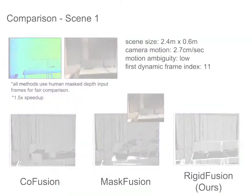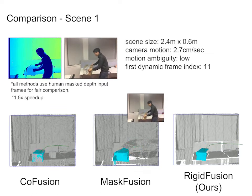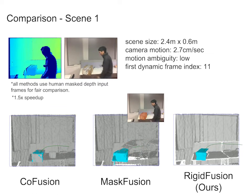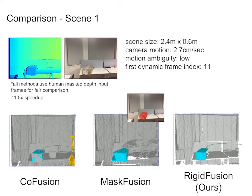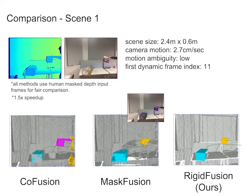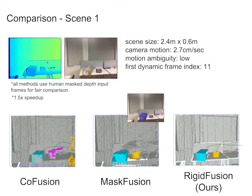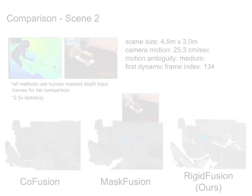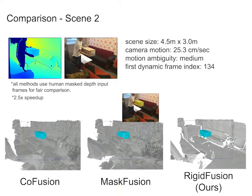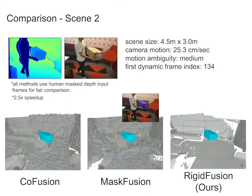We compare the state-of-the-art dynamic scene reconstruction methods, co-fusion and mask fusion, in scenes with less dynamics and scenes with more dynamics.